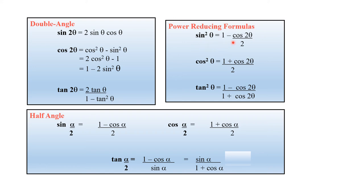Power reducing formulas: sin squared theta is equal to (1 minus cos 2theta) divided by 2. Cos squared theta is equal to (1 plus cos 2theta) divided by 2. For half angle formulas: sin(theta over 2) equals the square root of (1 minus cos theta) over 2, and cos(theta over 2) equals the square root of (1 plus cos theta) over 2.